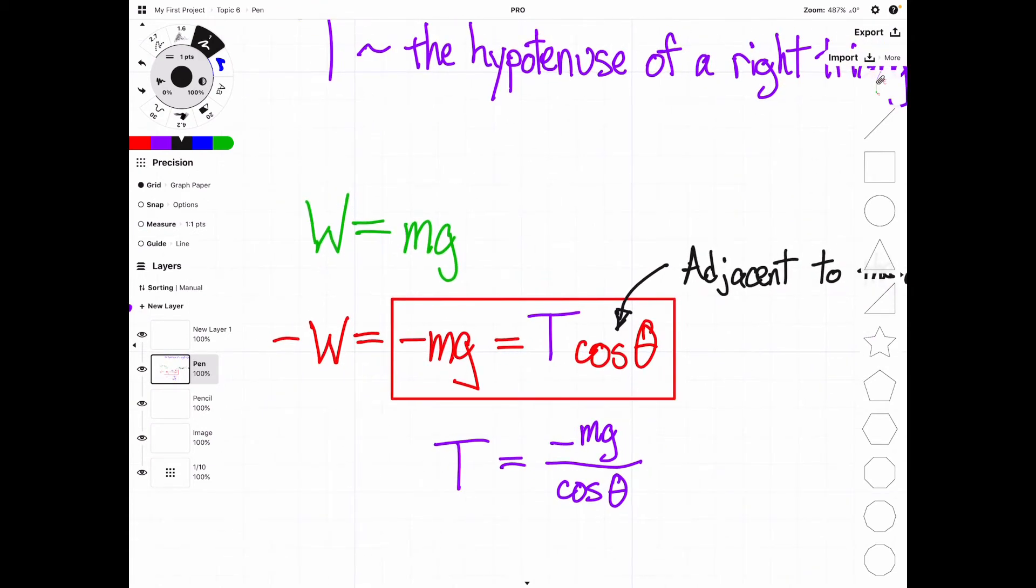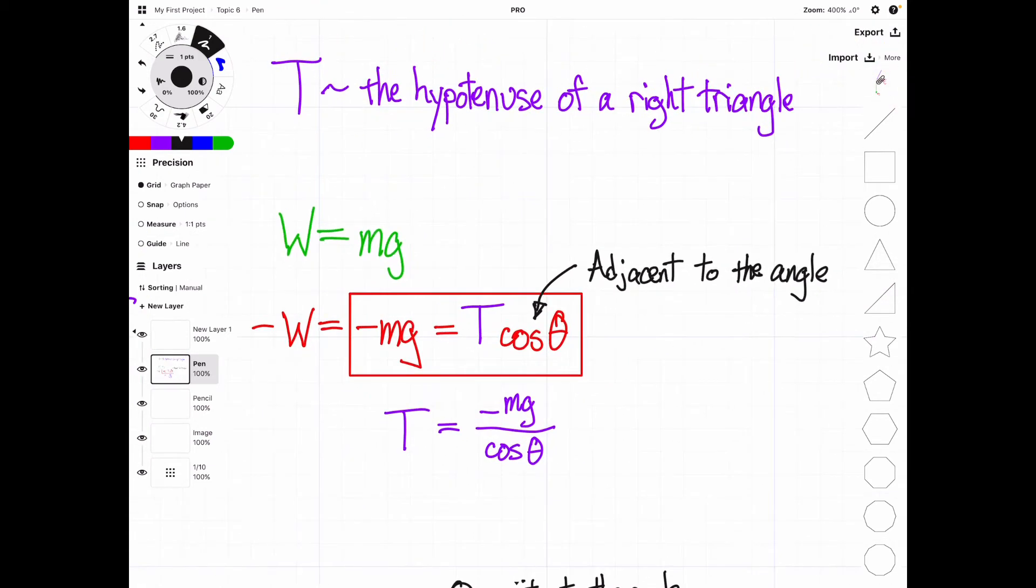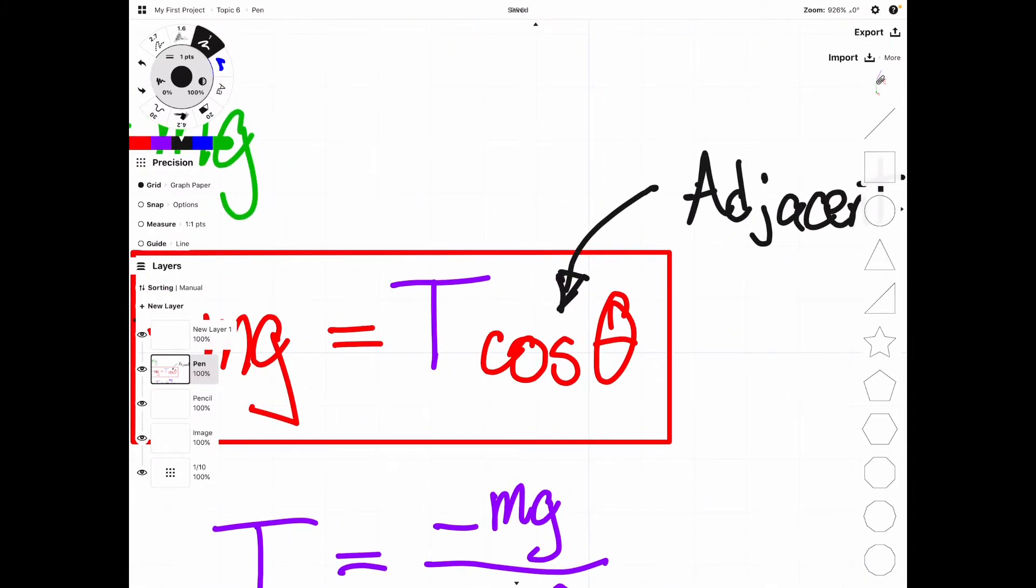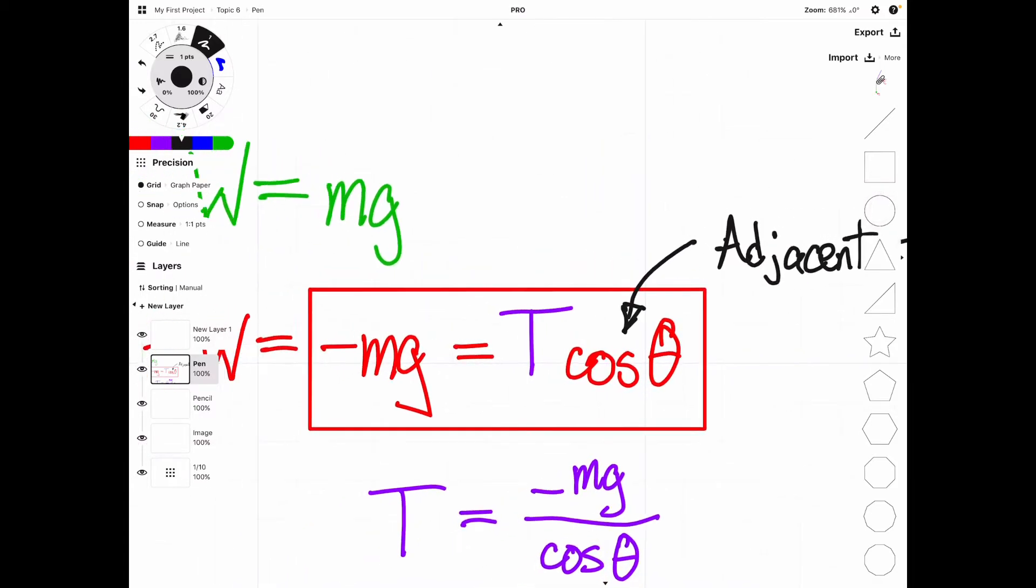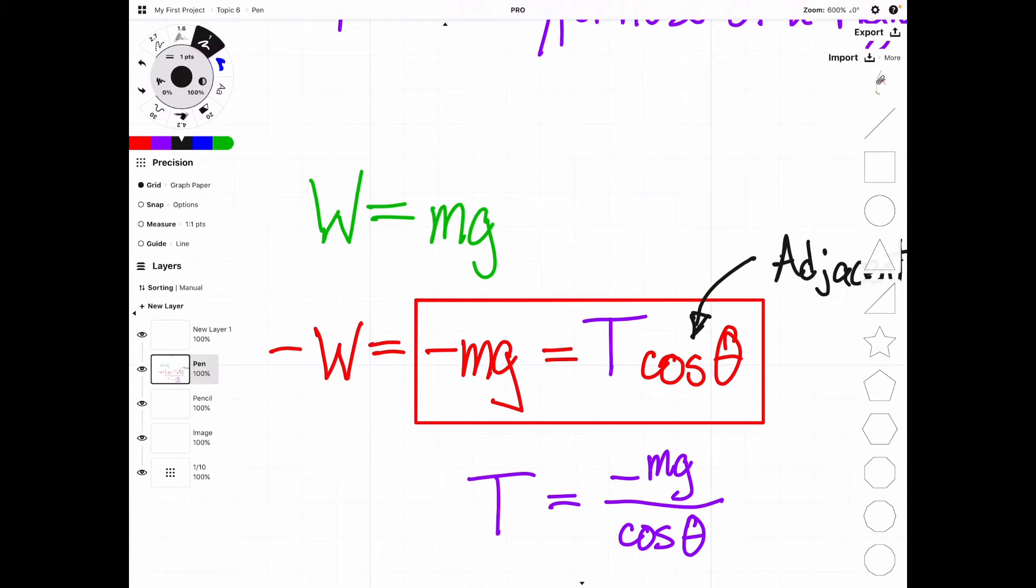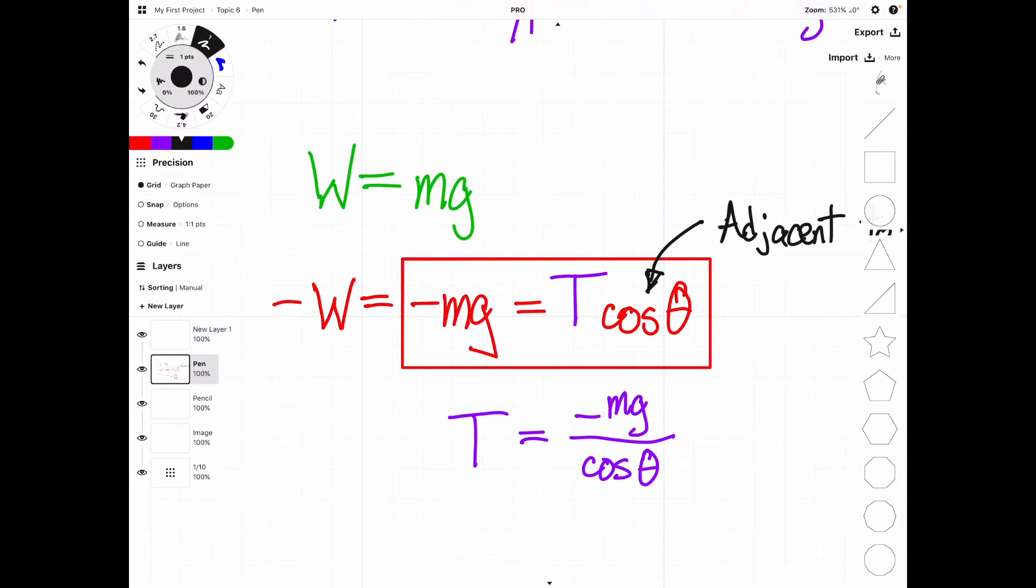And we also know that the adjacent to an angle is equal to T, the hypotenuse, times cosine of theta. So that then gives us this equation, where weight is equal to negative mass times gravitational acceleration, being equal to tension times cosine of theta.